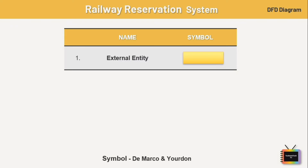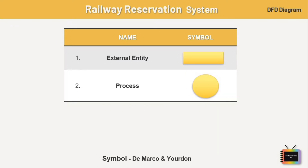Entities are referred to as terminators, sources, sinks, and actors. Next is process — a process receives input data and produces output data with a different form or content. Every process has a name that identifies the function it performs.